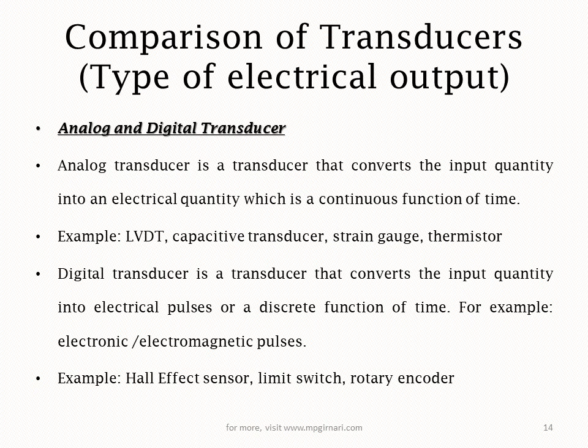For example, electronic or electromagnetic pulse — is type ka output hoga. Konse instruments is mein hum log rakh sakte hain: Hall effect sensor, limit switch, rotary encoder, etc.